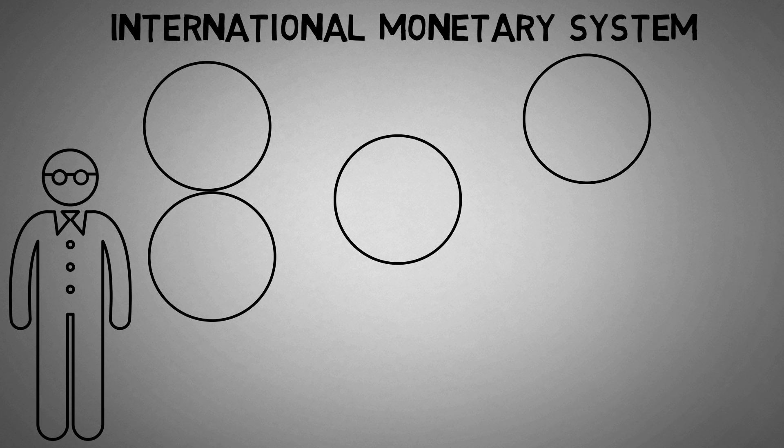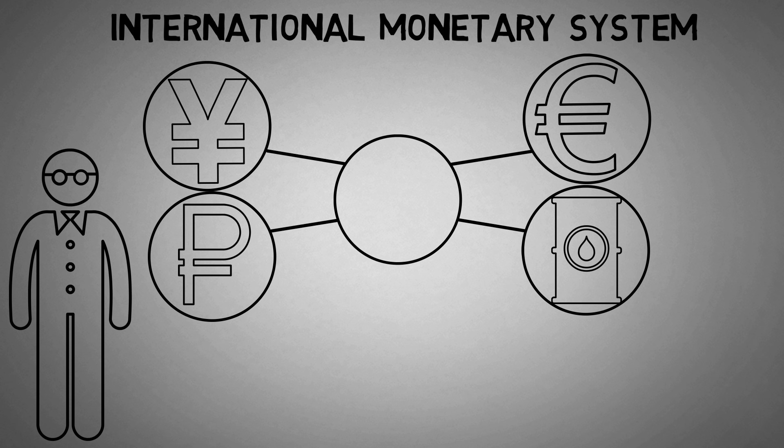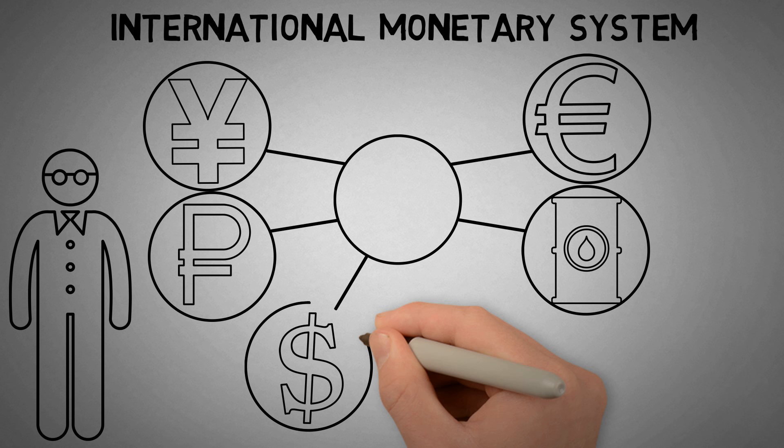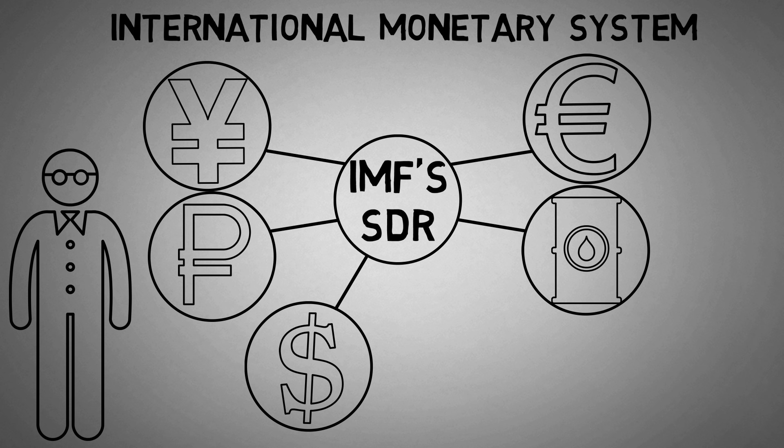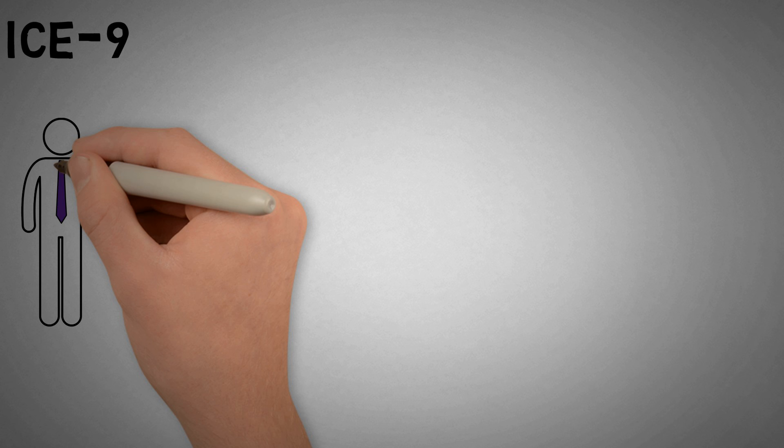The elites know the current international monetary system is unsustainable, and that this recovery is artificial. When the next crisis arrives, they plan on using the shock doctrine, a tactic Jim explains in the book, to get the IMF's SDR to replace the dollar as the world's new reserve currency. In all likelihood, this crisis will be too massive to paper over. So, what is the solution? ICE-9.